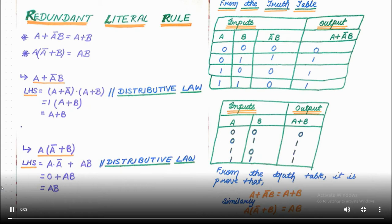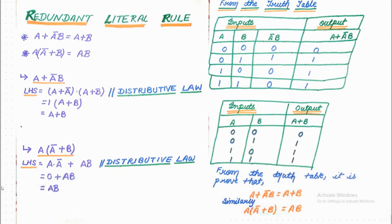Today I came with one of the most important topics: the Redundant Literal Rule. This rule is divided into two parts. The first one is: A plus A-complement into B equals A plus B. The second one is: A into (A-complement plus B) equals AB. This rule is mostly used in Boolean algebra simplification.